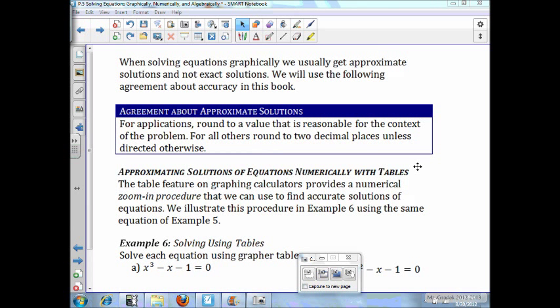When solving equations graphically, we usually get approximate solutions, not exact solutions. We'll use the following agreement about accuracy in this book. For applications, round to a value that is reasonable for the context of the problem. For example, round to two decimal places for money. For all others, round to two decimal places unless otherwise directed. Now, the table feature on graphing calculators provides a numerical zoom-in procedure that we can use to find accurate solutions of equations.